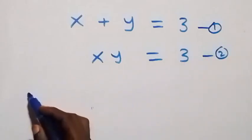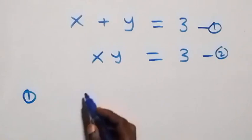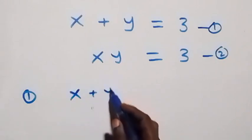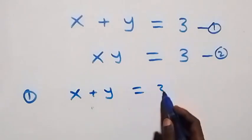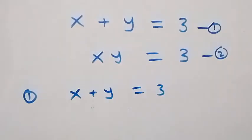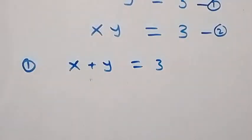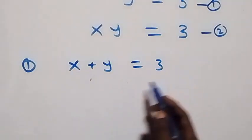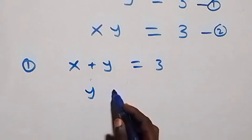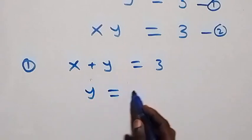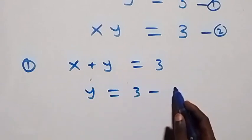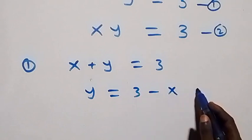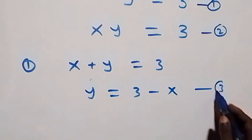From equation 1, we have x plus y equals to 3. Let's make y the subject and take x to this side. Then we have y equals to 3 minus x. From here, label this as equation 3.